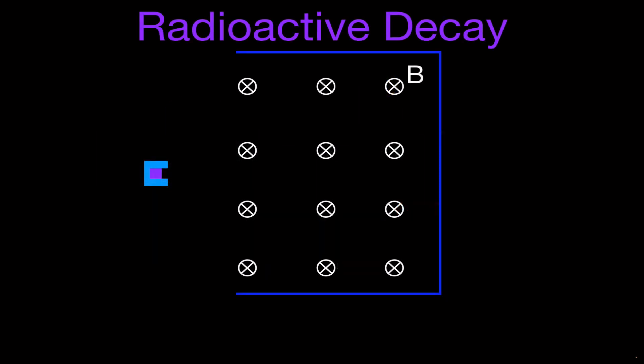In the previous video, I went over an explanation of the discovery of how radioactivity or radiation was discovered, and the first radioactive element that was discovered, uranium, and that was done by Becquerel in 1896. And after they discovered that uranium was radioactive, they want to know what is that radioactivity.